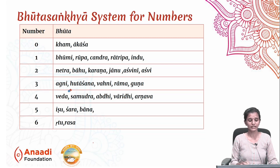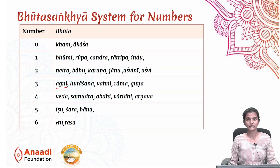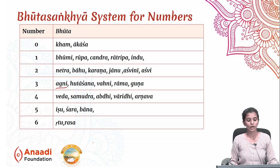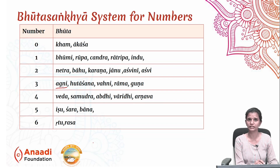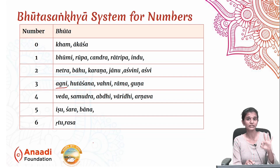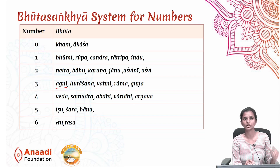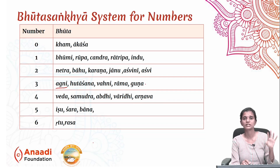Let us take Agni. There were three Agnis in each household during Vedic times, and that is why Agni represents the number three. Hutashana and Vahni are synonyms of the word Agni. In our Itihasas, there are three Ramas — Balarama, Raghurama, and Parashurama. The three Gunas — Sattva, Rajas, and Tamas — also represent three.